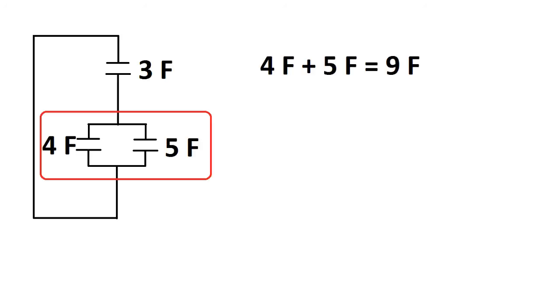Let's first start off by condensing those two capacitors that are in parallel, the 4 farad and the 5 farad. So being that they're in parallel we just add the capacitance together. So we just have 4 farads plus 5 farads equals 9 farads.